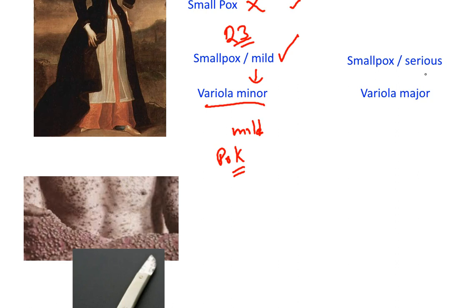Her brother and her best friend Anne both contracted the serious form of smallpox, variola major, and in fact died from those.